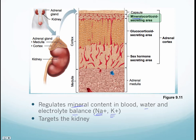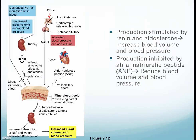Because we regulate sodium and potassium, we can maintain our water balance and electrolyte balance. And by regulating these, we can also regulate the amount of water entering and exiting our kidneys, and therefore regulate blood volume and blood pressure. The mineralocorticoid layer secretes a hormone called aldosterone.